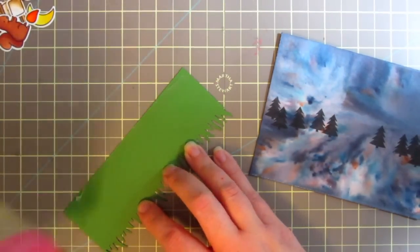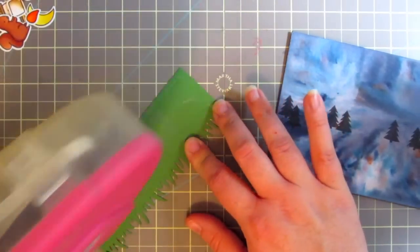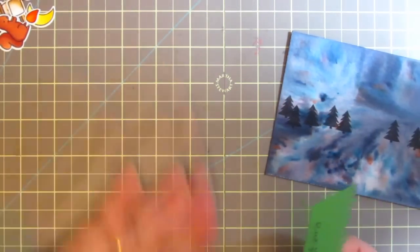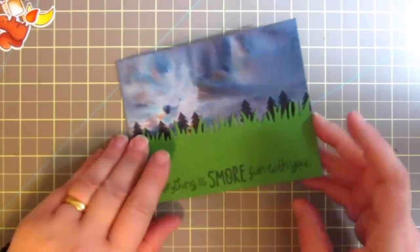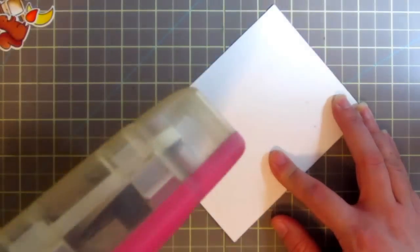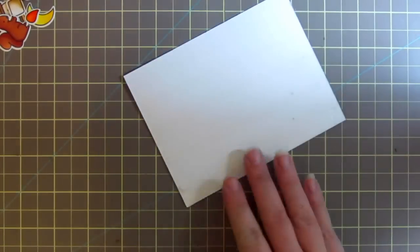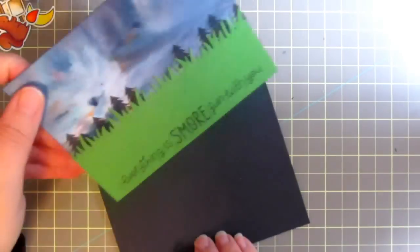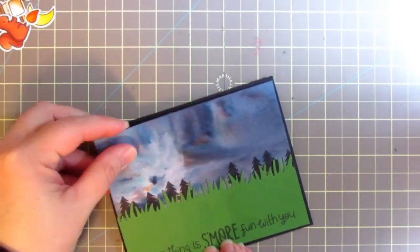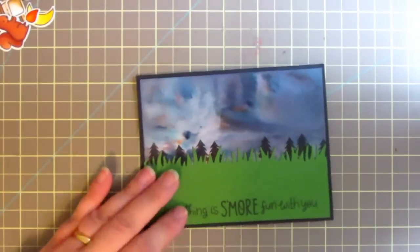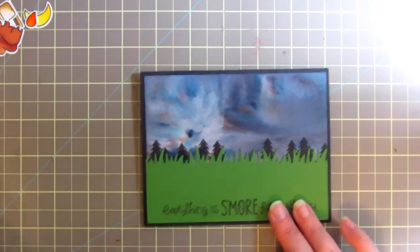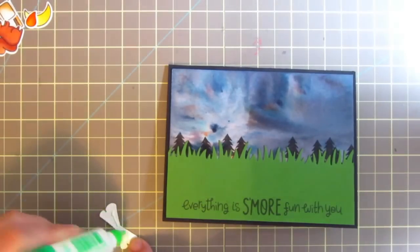Now I'm just grabbing my ATG to go ahead and adhere that grass panel to the front of the card. Since this is going through the mail, I didn't want to give it too much dimension. I am going to pop up some of my elements on the card, but I wanted the grass to be kind of set back so that the critters are the focus. I'm also using a generous amount of ATG to adhere that watercolor cardstock to my card front, which is a piece of Lawn Fawn black licorice cardstock. Because I taped my paper down, it didn't really warp at all, but it is very sturdy and thick.